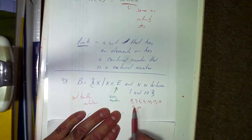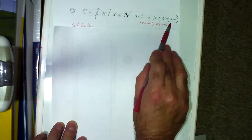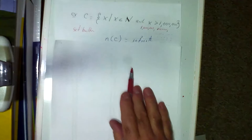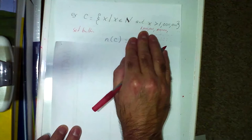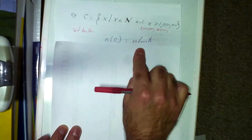Suppose set C consists of all x such that x is a natural number and x is greater than one million. That's written in set-builder notation. What is the cardinal number of C? It goes from one million onwards forever, so the cardinal number is infinite — it just keeps going: 1,000,001, 1,000,002, 1,000,003, and so on.